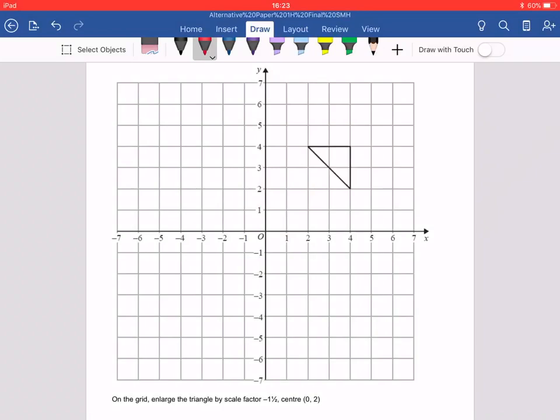All right, so first thing, if we're doing an enlargement, whether it will be positive or negative, decimal or integer, mark the centre. Yes, yes. So let's mark the centre of enlargement. So 0, 2, I'm going to put a cross there. Hold on. And then done.